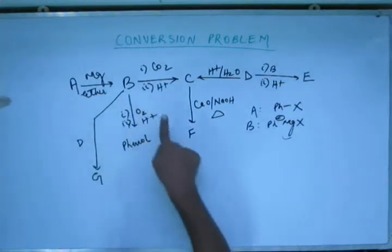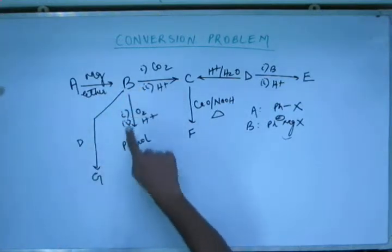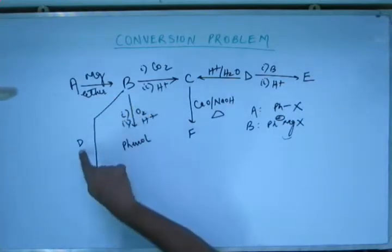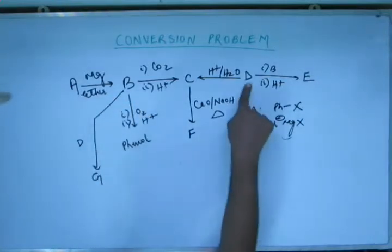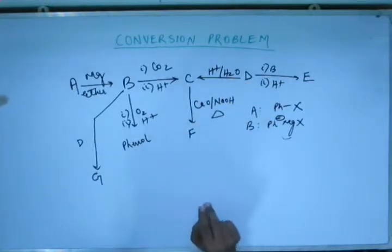So, once we have identified A and B, then rest of the thing will be a cakewalk for us. We can't go in this part because D is being added on G and D is here. So first we will have to identify what is D. Let's go on finding out C.